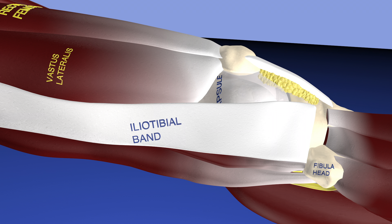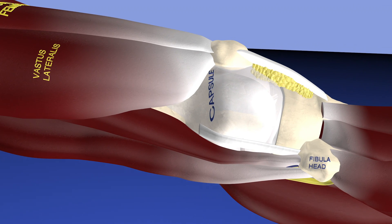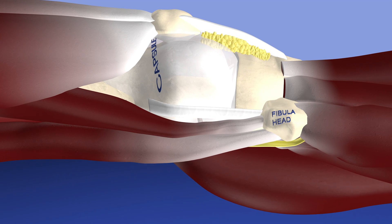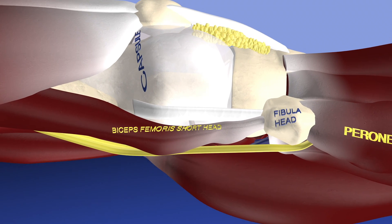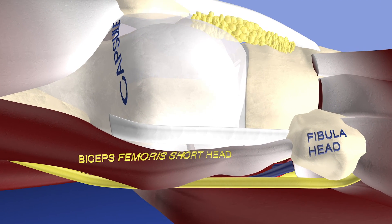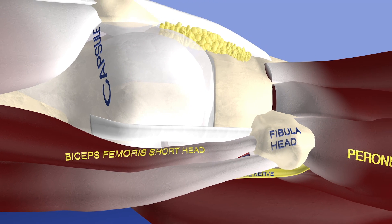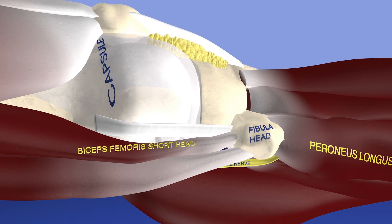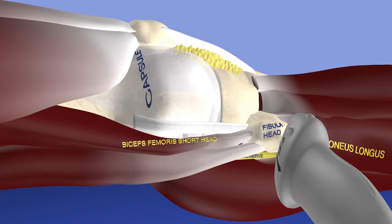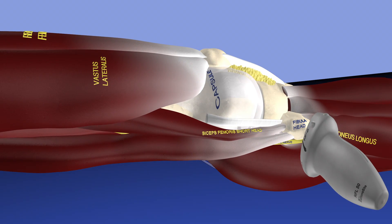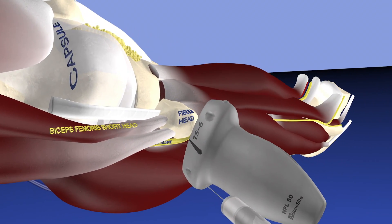Here we are looking at the superficial structures. We have the iliotibial band that we just removed, and now we're outlining our main structures — the biceps femoris muscle and tendons — and the common peroneal nerve, which lies just underneath that. You can also see some of the quad musculature as well.